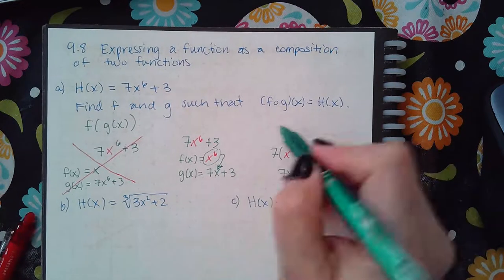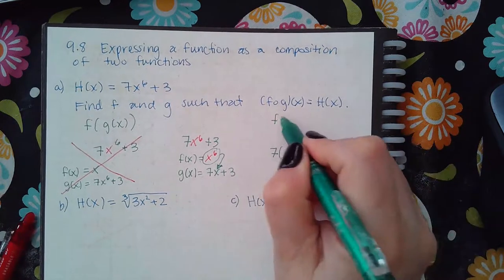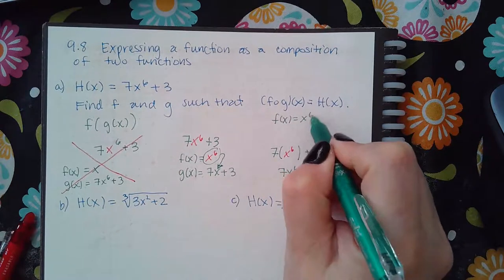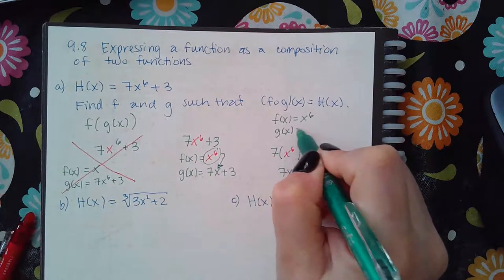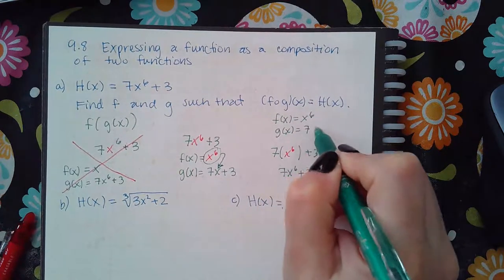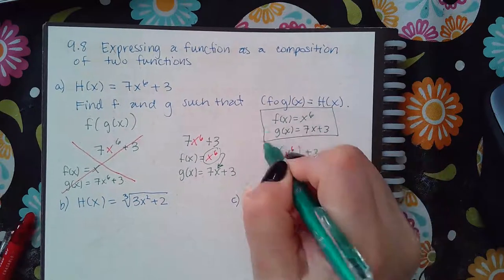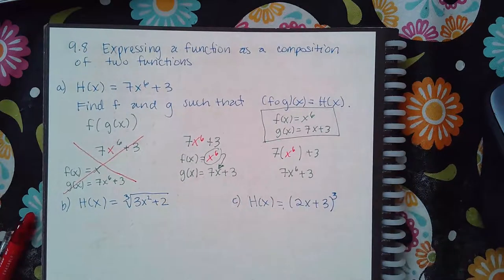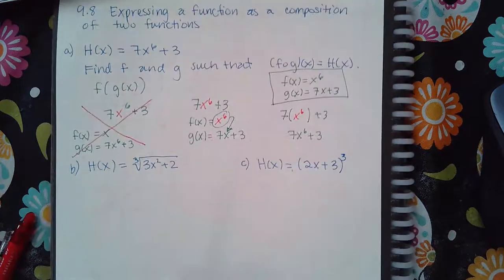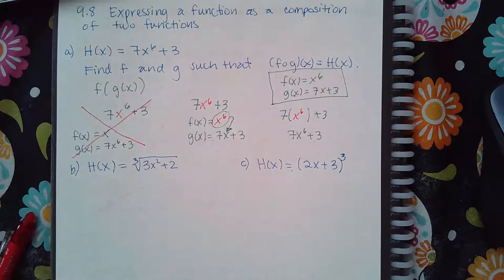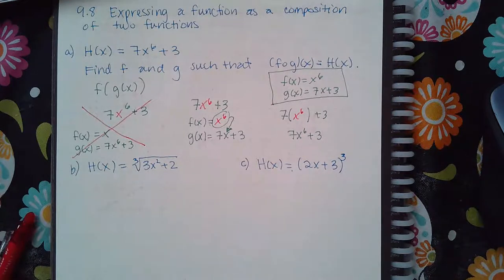So I just found the composition to check my work, and I am correct: f of x is x to the 6th and g of x is 7x plus 3. It's definitely important that you check your answers. The idea is always to identify the inside function and the outside function.